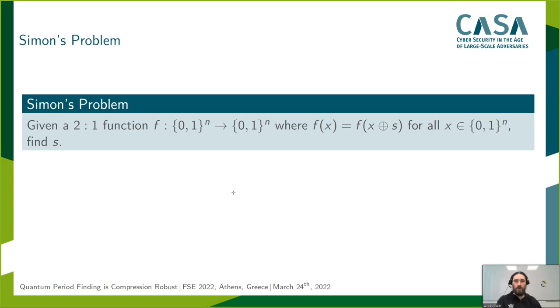This problem is classically hard to solve, and requires at least 2^(n/2) queries to f. More precisely, we would have to find a collision in f to calculate s, for a function that behaves like a random function beside the period s.